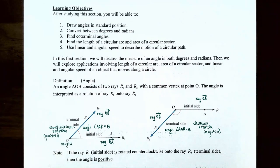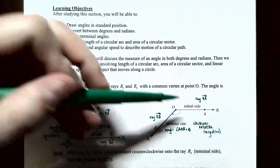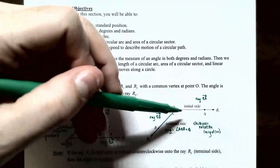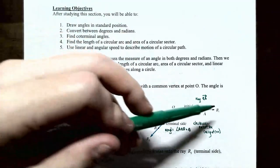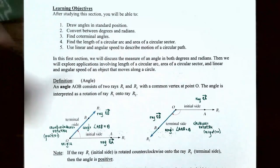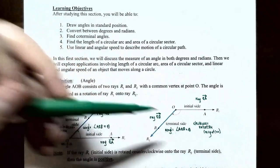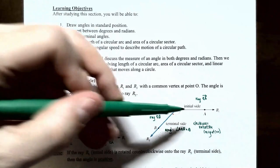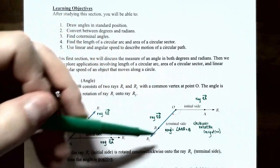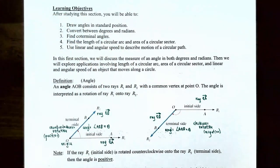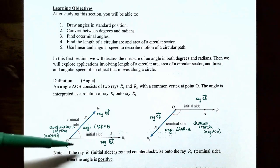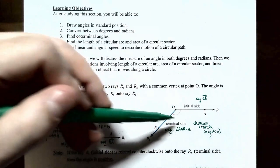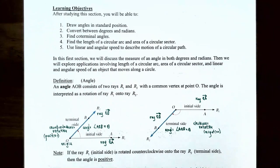If the angle is rotated counterclockwise, you have the ray OA which is ray R sub 1, the initial side, and you rotate it clockwise and end up at ray R sub 2 which is the ray OB, so you have angle AOB formed. The difference between these two is if you have a counterclockwise rotation that's considered a positive rotation, but a clockwise rotation is considered a negative rotation.